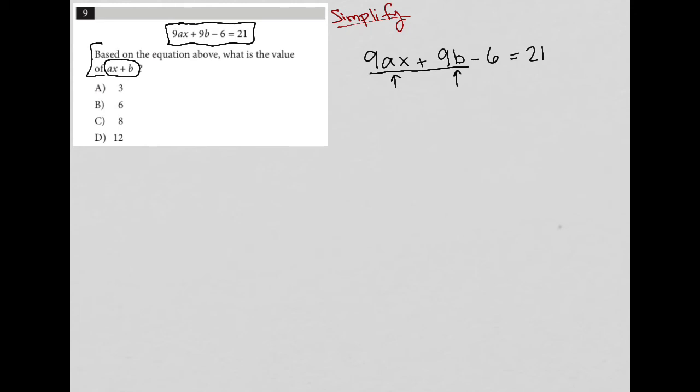So I'm going to factor that out. This means 9AX + 9B is the same as 9 times (AX + B).